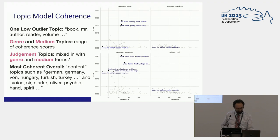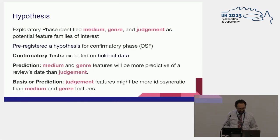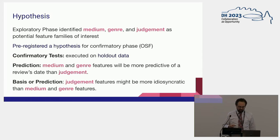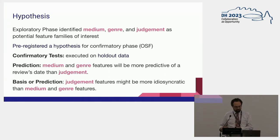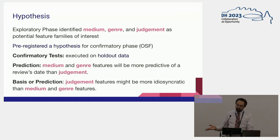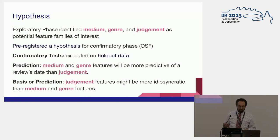The hypothesis I wanted to evaluate was the relative coherence of these different feature families — medium, genre, and judgment terms — and which ones seem to be most coherently changing over time as a set. My prediction was that medium and genre features would be more predictive. This was partly based on the topic modeling, since the judgment terms didn't co-occur with each other.